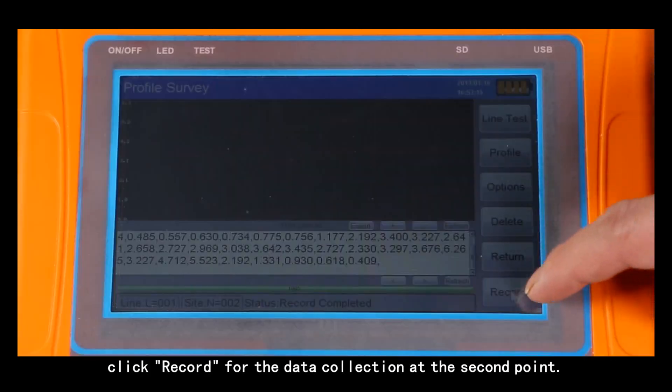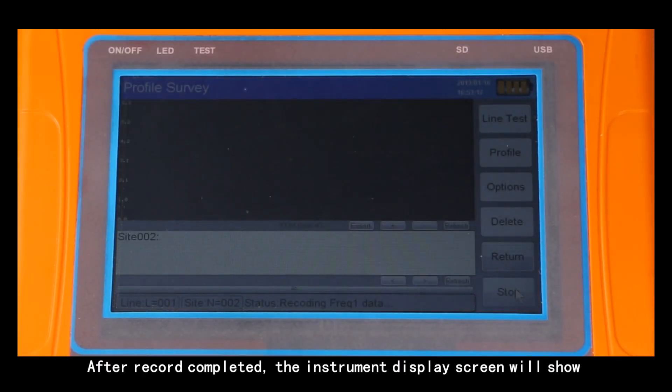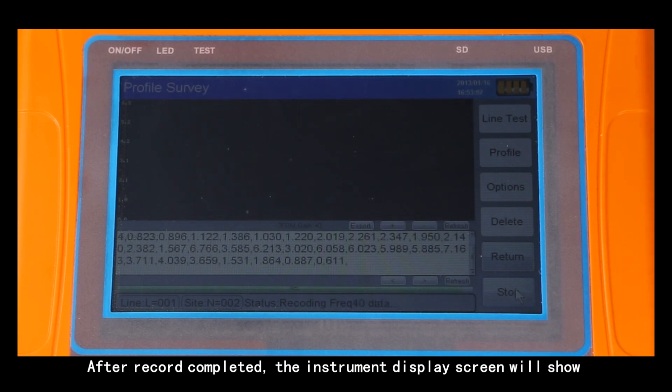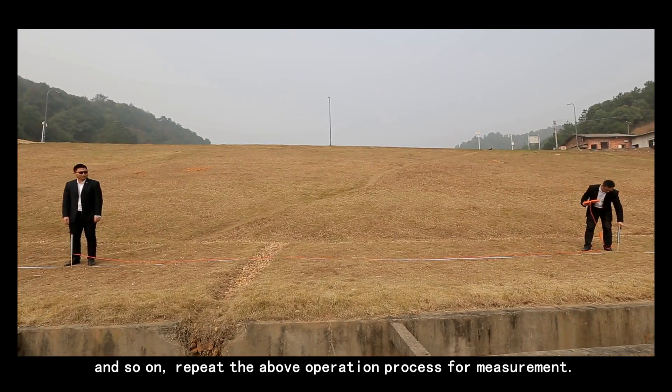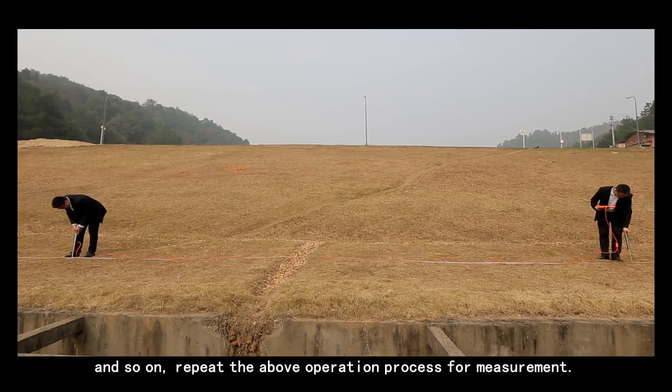Click record for the data collection at the second point. After record completed, the instrument display screen will show record completed. And so on. Repeat the same operation process for measurement.